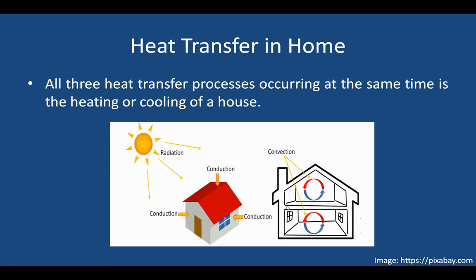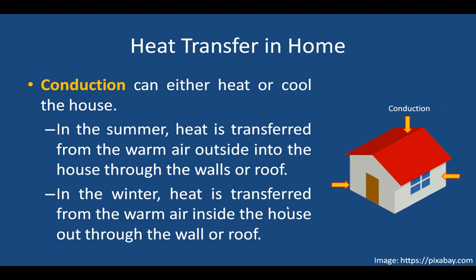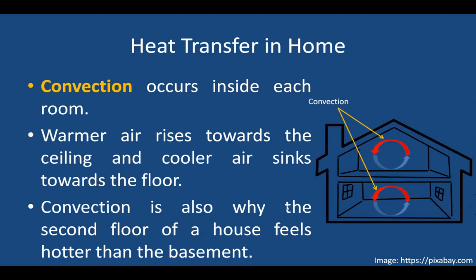Let's take one example: heat transfer in a home. All three heat transfer processes occur at the same time in the heating or cooling of a house. For conduction: in summer, heat is transferred from the warm air outside into the house through the walls or roof; in winter, heat is transferred from the warm air inside the house outward through the walls or roof. For convection: this occurs inside each room, where warmer air rises towards the ceiling and cooler air sinks towards the floor. Convection is also why the second floor of a house feels hotter than the basement.